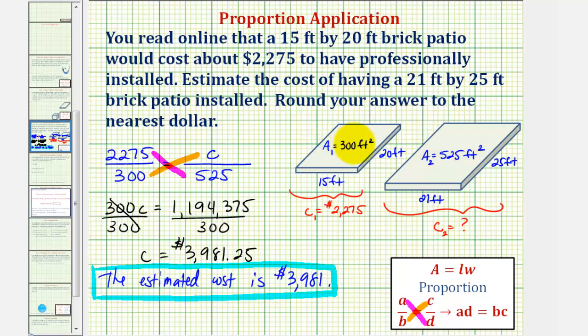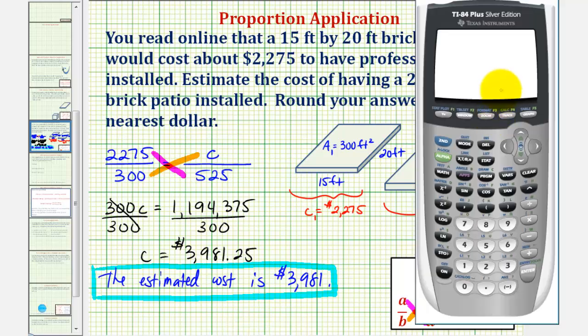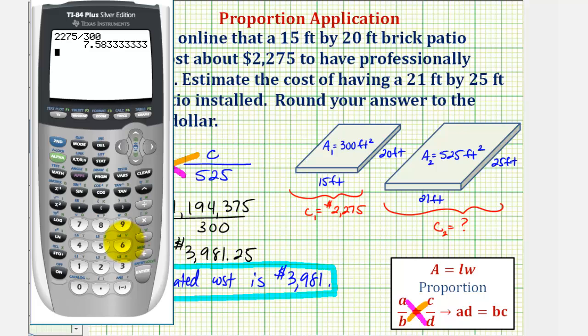So I do want to show this on the calculator. We take the cost of the smaller patio, $2,275, and divide by the area of 300 square feet. This gives us the cost per square foot. And if we multiply this by the area of the second patio, we will get the same result. So again, this is the cost per square foot times 525 square feet, gives us the same result.